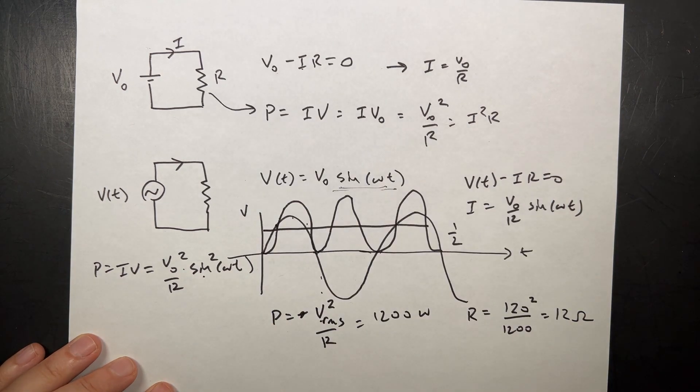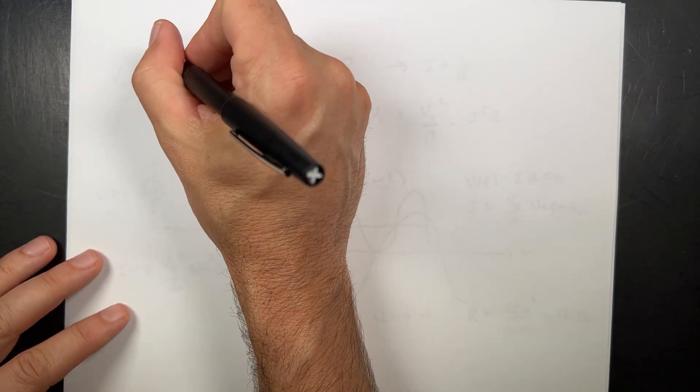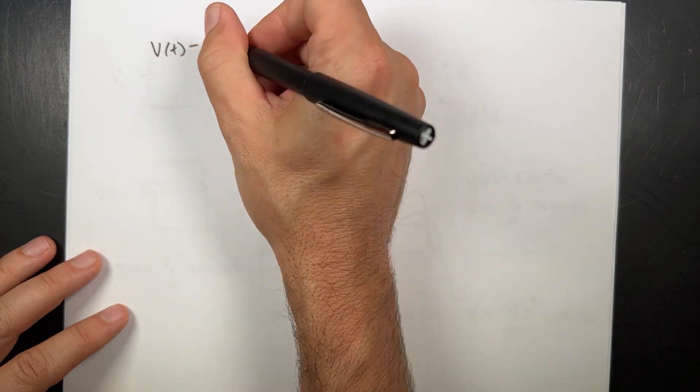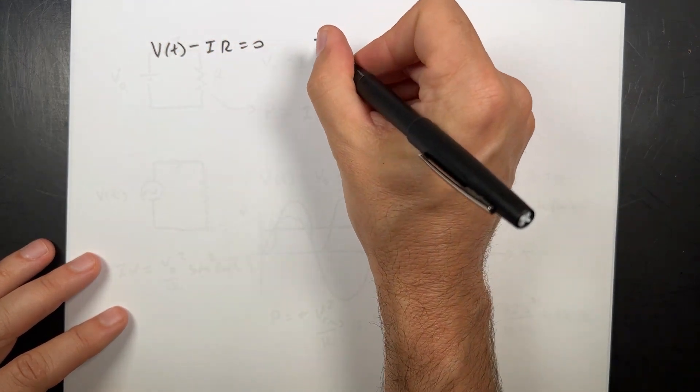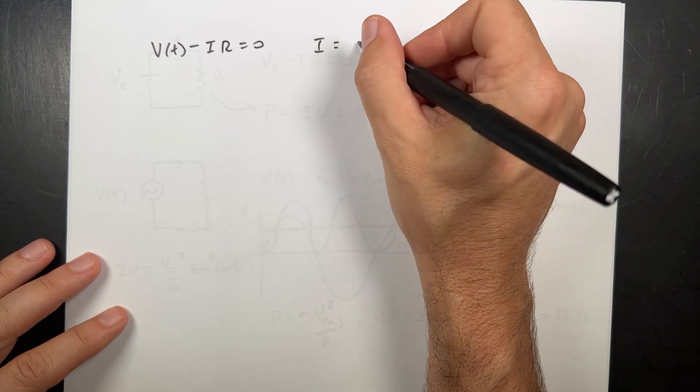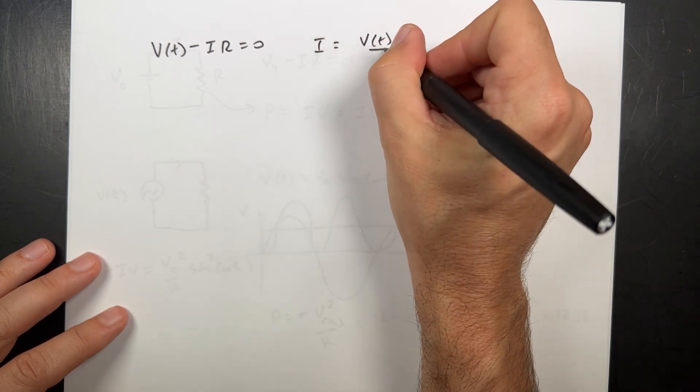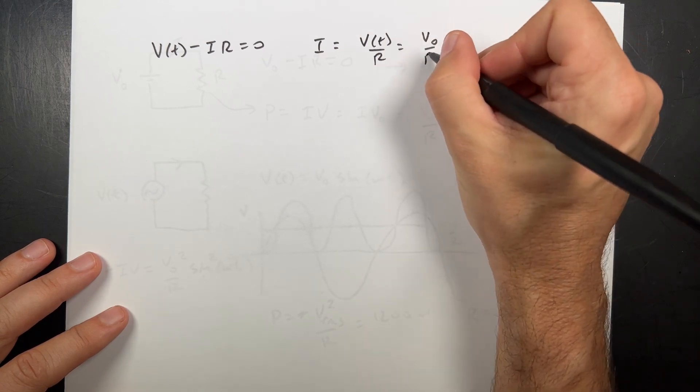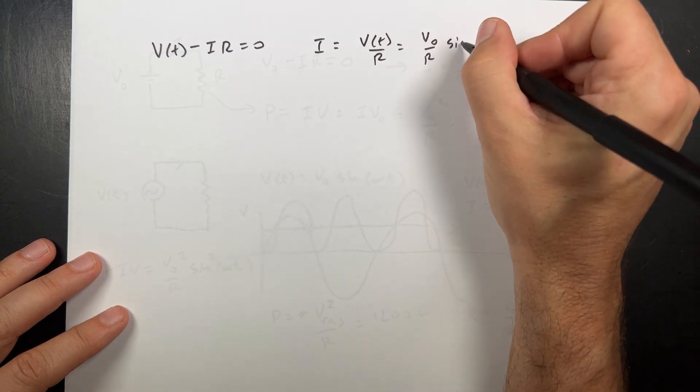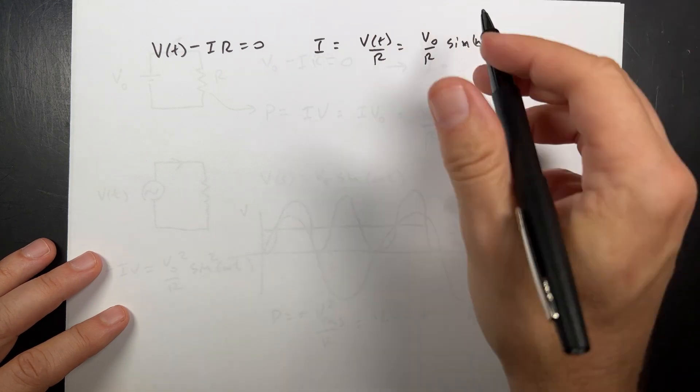Now, the next part, what's the RMS current draw? Again, I already did this. V as a function of T minus I R equals zero. So I is going to be equal to V as a function of T over R, which is going to be V0 over R sine omega T.